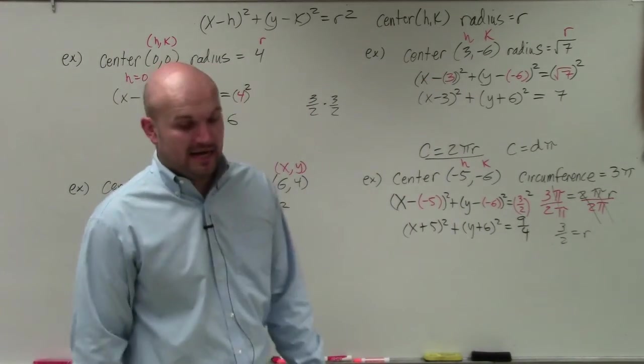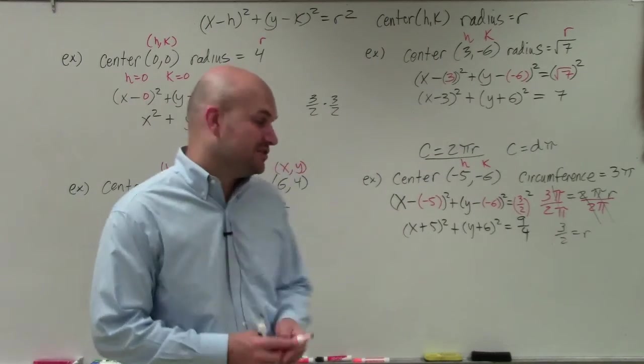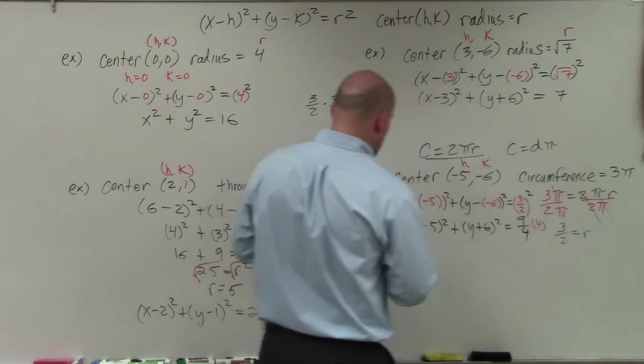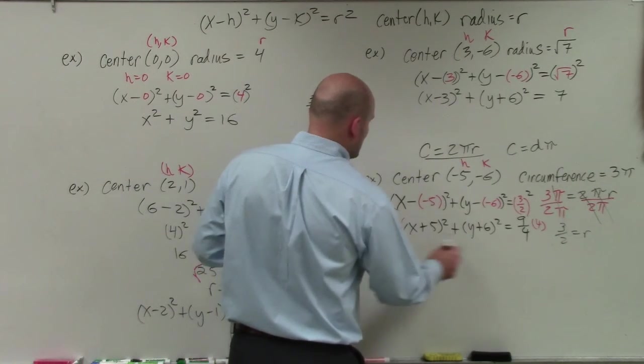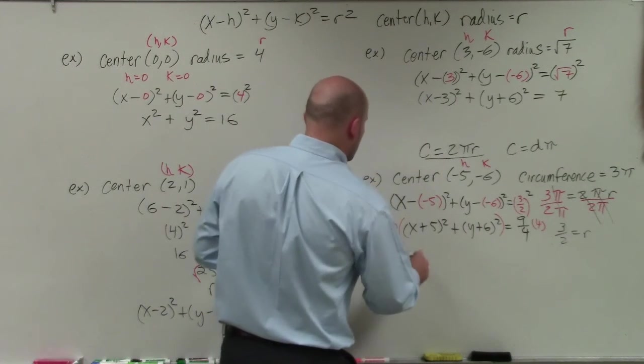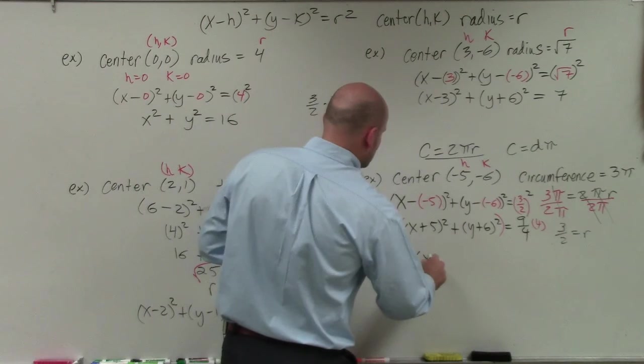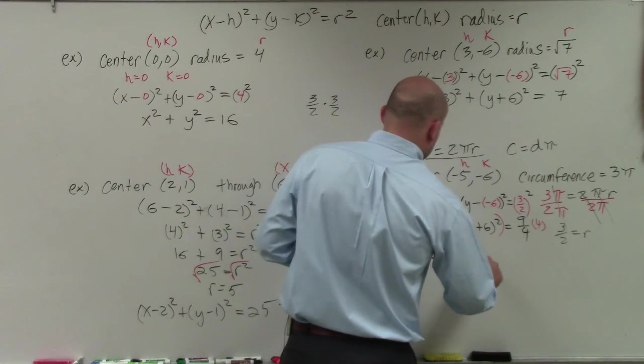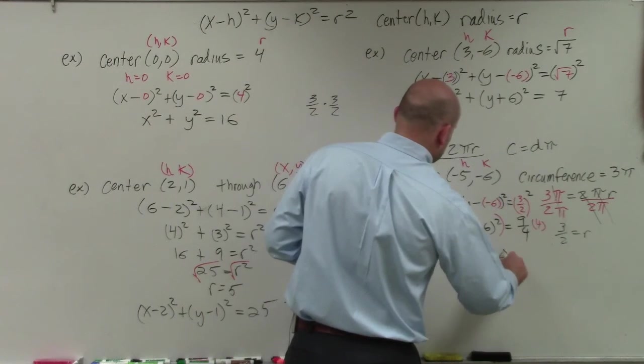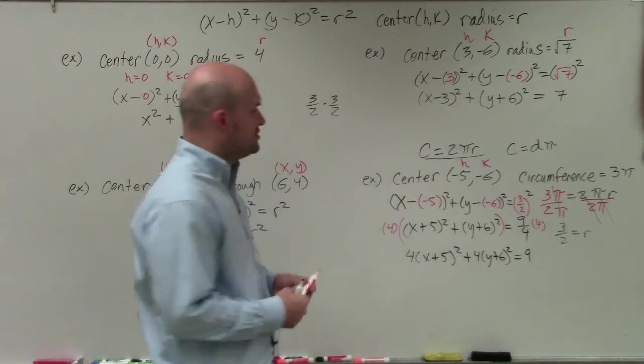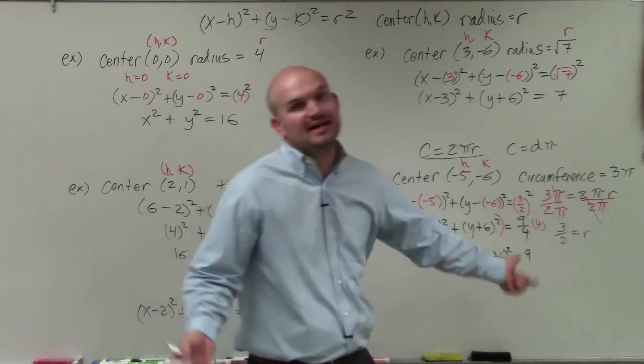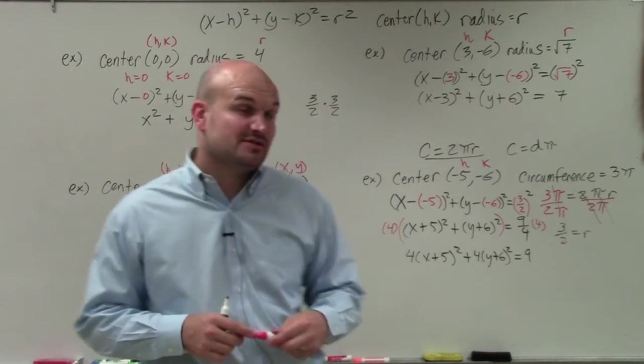Now, that's perfectly fine. Some problems or teachers might ask you to do it without any fractions. So to do that, you can multiply by 4 on both sides. Just remember to apply the distributive property. And another acceptable way to write this answer is 4 times x plus 5 squared, plus 4 times y plus 6 squared, equals 9. OK. Just remember that you'd have to divide by 4 on both sides, again, to find the radius. But that's just another way to write it.